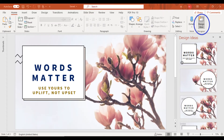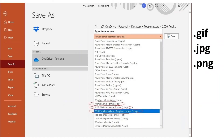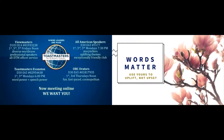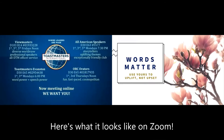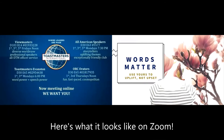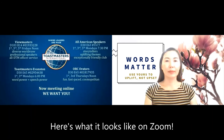If you want to change to another design, click on one of the options on the right side of the screen. Make sure you save your work as one of these three file types. Here's what your personalized virtual background looks like on Zoom.